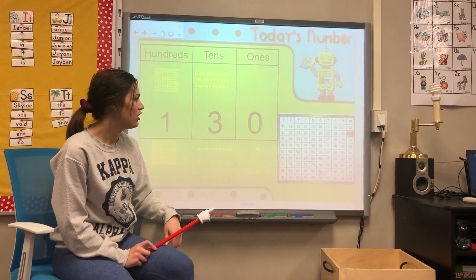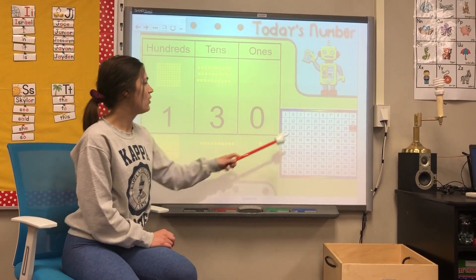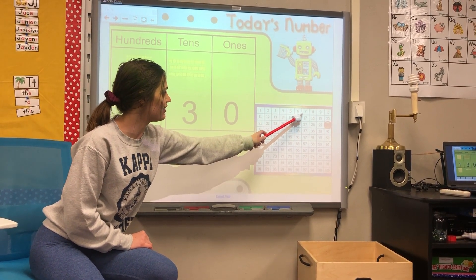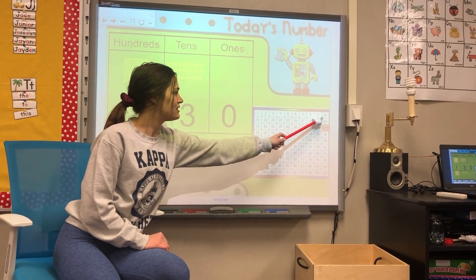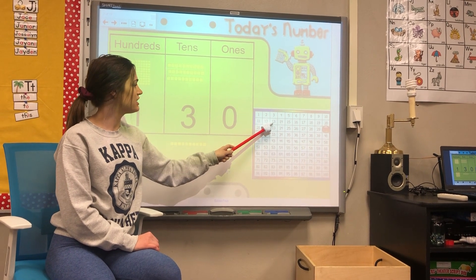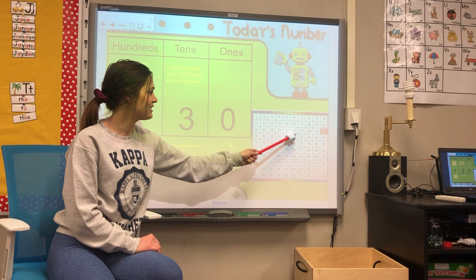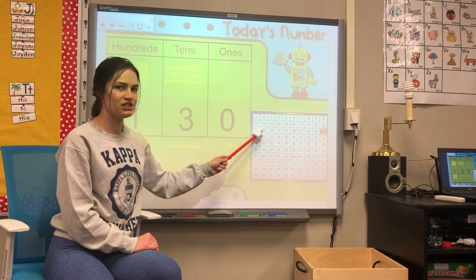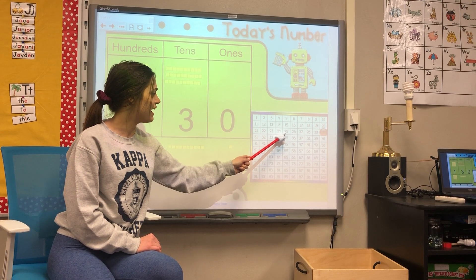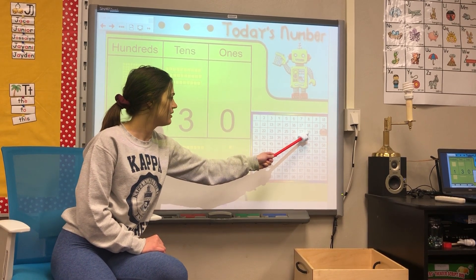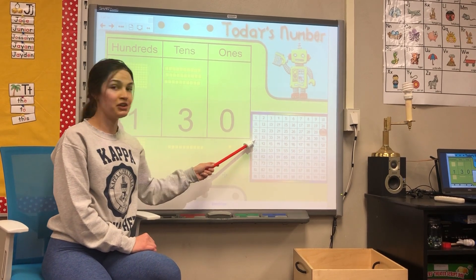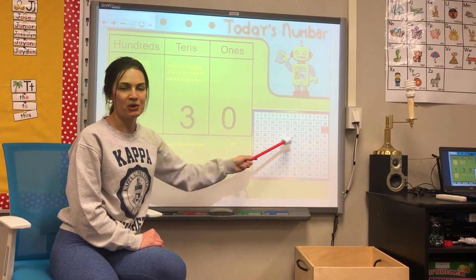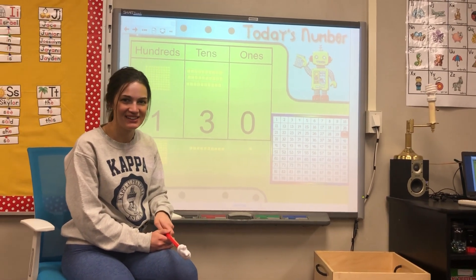Let's count to 36 today. 1, 2, 3, 4, 5, 6, 7, 8, 9, 10, 11, 12, 13, 14, 15, 16, 17, 18, 19, 20, 21, 22, 23, 24, 25, 26, 27, 28, 29, 30, 31, 32, 33, 34, 35, 36. Were you able to make it all the way to 36 without making a mistake? Good job.